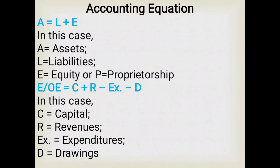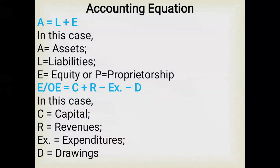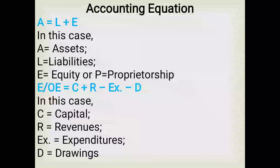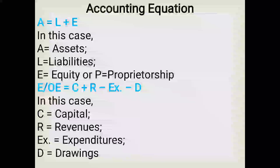The basic accounting equation, also called the balance sheet equation, represents the relationship between the assets, liabilities, and owner's equity of a business. It is the foundation for the double-entry bookkeeping system — for each transaction, total debits equal total credits. Assets means the economic resources that belong to a business that are invested for making profit, for example furniture, building, machinery, and land.